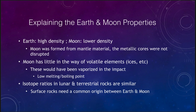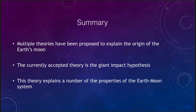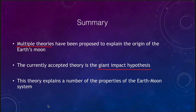To summarize: multiple theories have been proposed to explain the origin of the Earth's moon and why it is the only object in the inner solar system with a large moon. The currently accepted theory is the giant impact hypothesis, which suggests that a large Mars-sized object crashed into the very early proto-Earth as it was forming. This theory can explain a number of the properties of the Earth-Moon system that are otherwise difficult to explain. That concludes our lecture on the origin of the moon, and we'll be back again next time for another topic in astronomy.